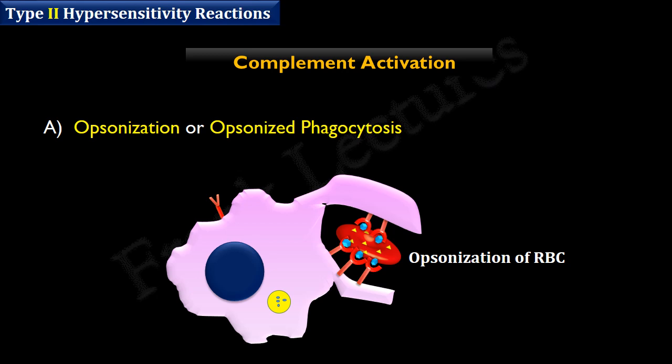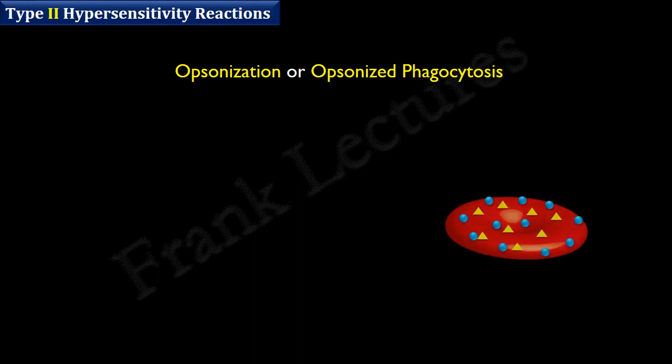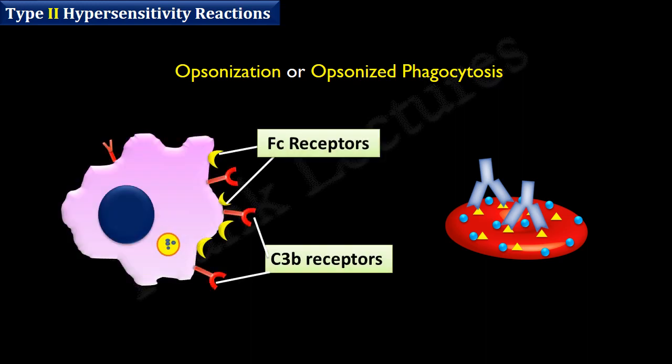As a result, the cell undergoes opsonized phagocytosis. Note that besides C3b molecules, antibodies also act as opsonins, because macrophages and neutrophils also have Fc receptors for antibodies. So if enough antibodies coat the target cell, it can be easily phagocytosed. Opsonization is most effective when both antibody and C3b opsonize the cell together.